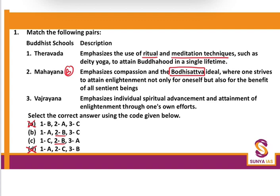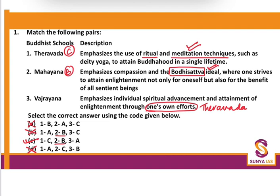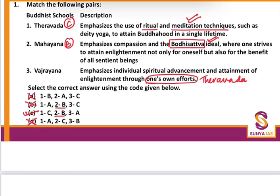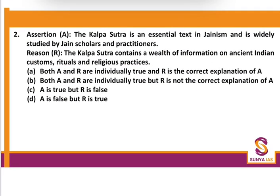We are left with options B and C. The next description: 'emphasizes spiritual advancement and attainment of enlightenment through one's own effort.' Your own effort is required in the old school — that is Theravada — because in the new school (Mahayana), you are supposed to take the help of Bodhisattva. So 3 matches with C. We are left with only option C, which implies Vajrayana — where apart from tantric practices, you also have to do meditation. So C is the correct answer.